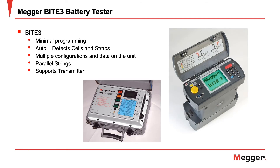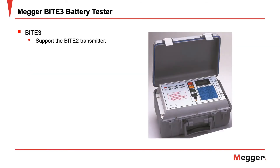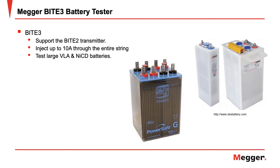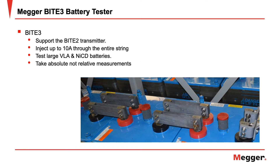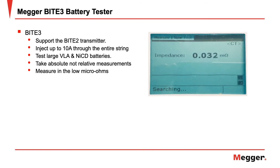The Byte 3 can also be used with an external transmitter, allowing you to test large VLA cells. The Byte 3 supports operation with a Byte 2 transmitter, which injects up to 10 amps through the entire string, allowing the Byte 3 to take high-resolution measurements — even for the largest VLA batteries. You will also be able to take absolute, not relative, measurements of bar-type intercell connections, measuring down into the low micro-ohms.